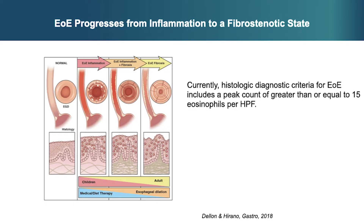This cartoon shows a conceptual model of EoE progression from an inflammatory background to a mixed inflammatory fibrotic picture, and ultimately to fibrostenotic disease. The risk of developing a fibrostenotic phenotype and the risk for stricture formation increases as the disease is left untreated.